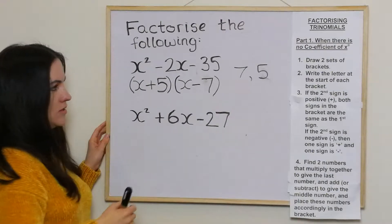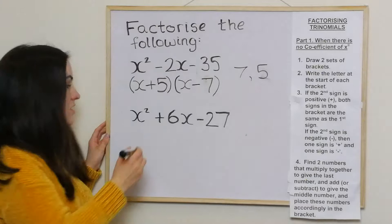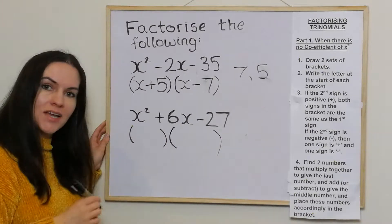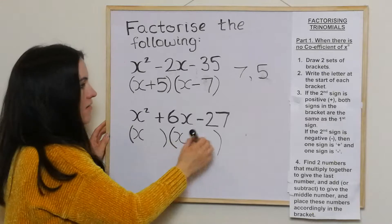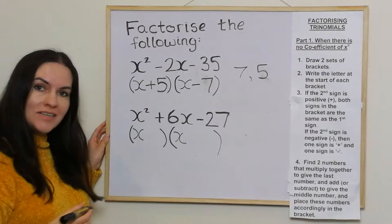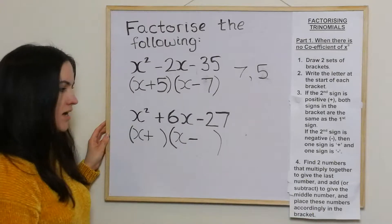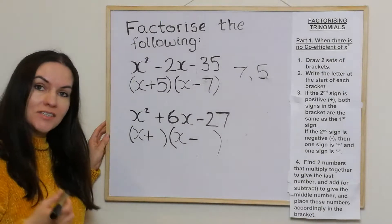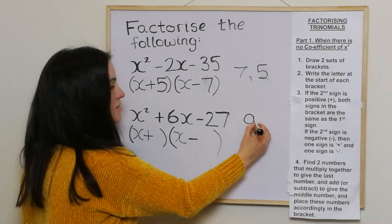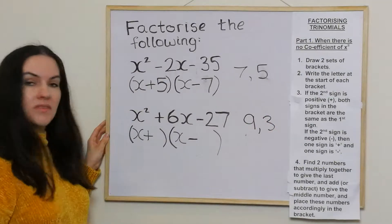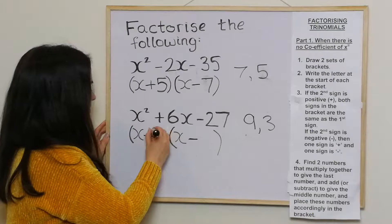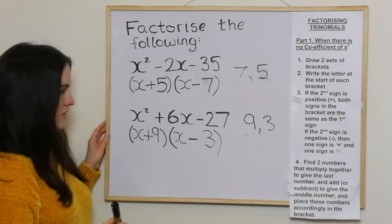For this next example, again there's no coefficient of x squared, so we draw two sets of brackets and write x and x at the start. The second sign is negative, so one sign is positive and one is negative. We're looking for two numbers that multiply together to give 27 and add or subtract to give 6. I'm thinking nine and three, because nine take away three gives me six, so I'll have positive nine take away three — and that works out nicely.